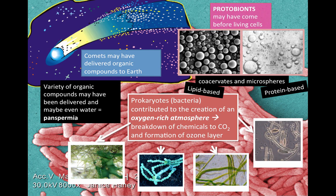A few other specific things to consider about the origin of life. One theory is called panspermia — the idea that life may have originated in outer space, and that comets may have delivered organic compounds to Earth, such as amino acids. It's also possible that water itself could have been delivered this way.